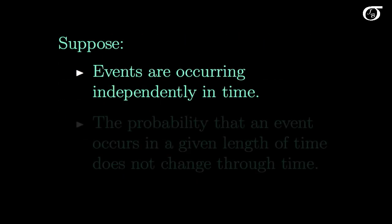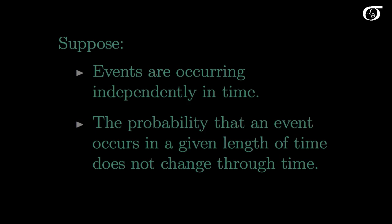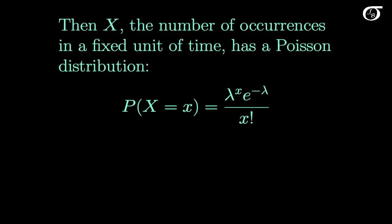Suppose that events are occurring independently in time, and that the probability that an event occurs in a given length of time does not change through time. Then X, the number of occurrences in a fixed unit of time, has a Poisson distribution.